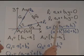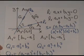And another line, L2, with the equation a2x plus b2y equals 0. So a1, b1, a2, and b2 are some arbitrary numbers.